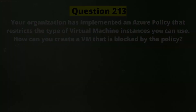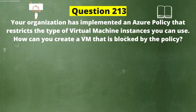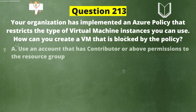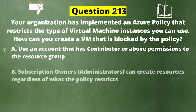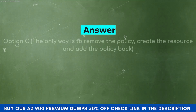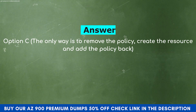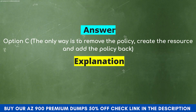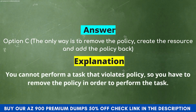Next question: Your organization has implemented an Azure Policy that restricts the type of virtual machine instances you can use. How can you create a VM that is blocked by the policy? Option A: Use an account with Contributor or above permissions to the resource group. Option B: Subscription owners and administrators can create resources regardless of the policy. Option C: The only way is to remove the policy, create the resource, and add the policy back. The correct answer is Option C. You cannot perform a task that violates policy, so you must remove the policy to perform the task.